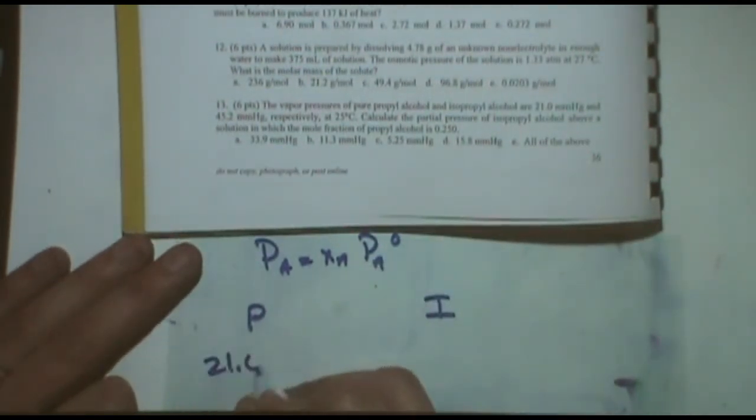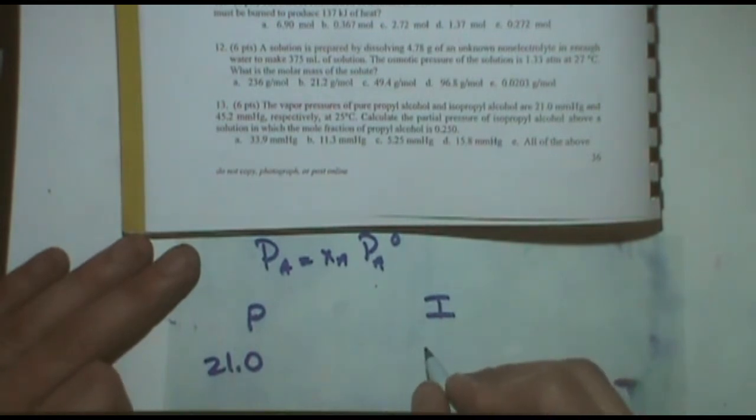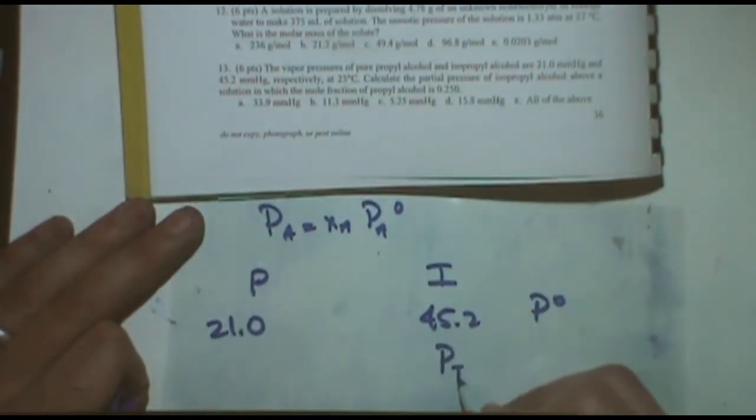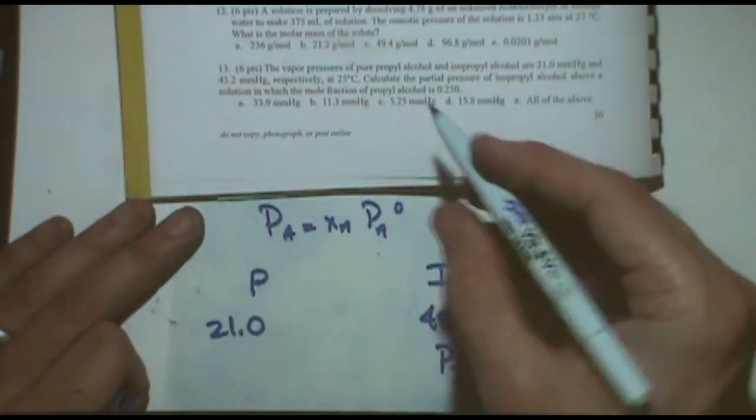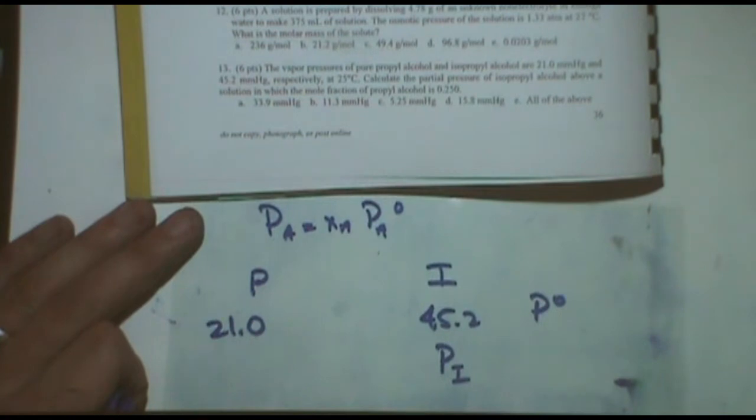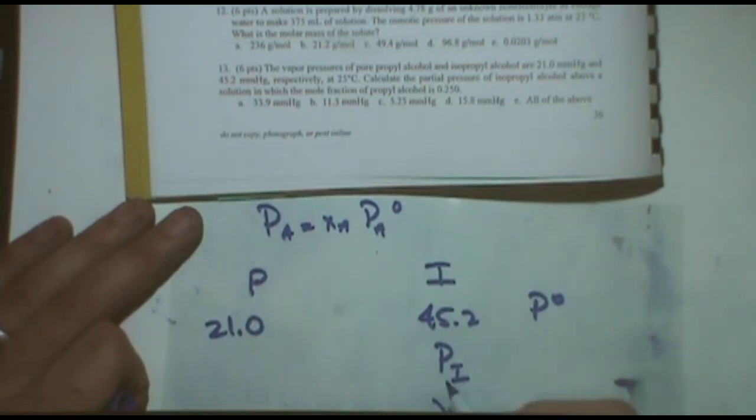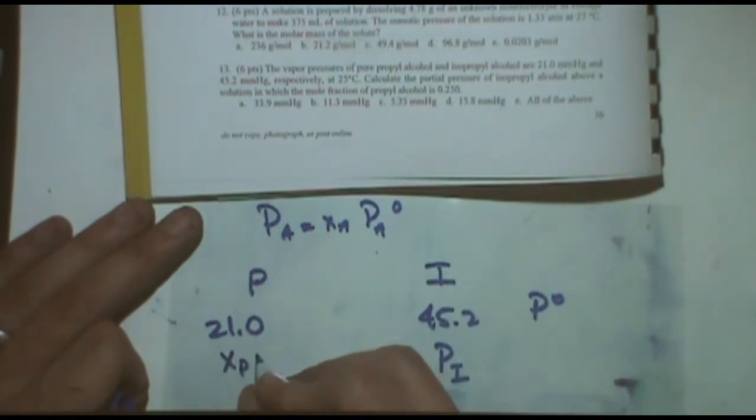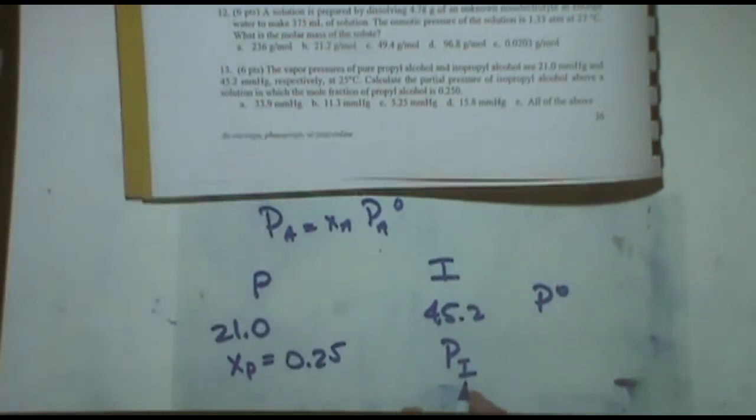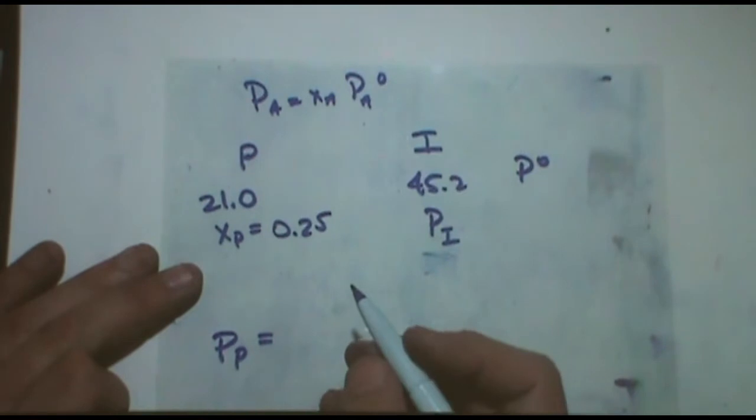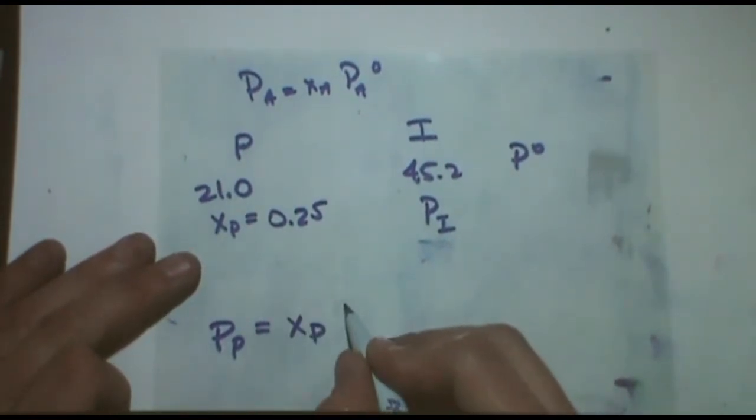So that's 21.0, this is the pure pressure, and 45.2, so P naught for both of them. Calculate the partial pressure of isopropyl above the solution. Partial pressures are always above the solution, that's what the gas is. The mole fraction of the propyl is 0.25.